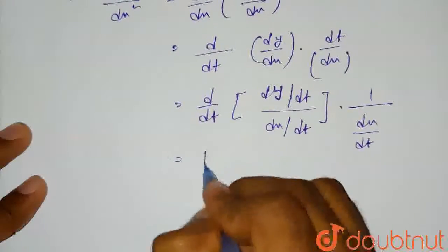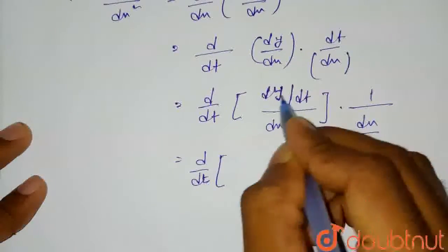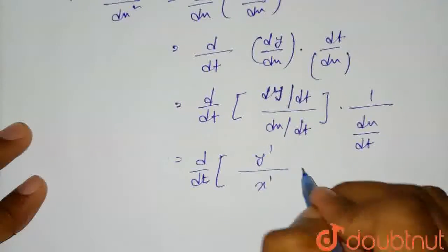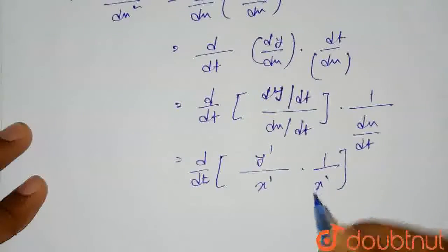So this equals d/dt of (y' divided by x') multiplied by 1/x'. Now we will keep it in a different separate bracket.